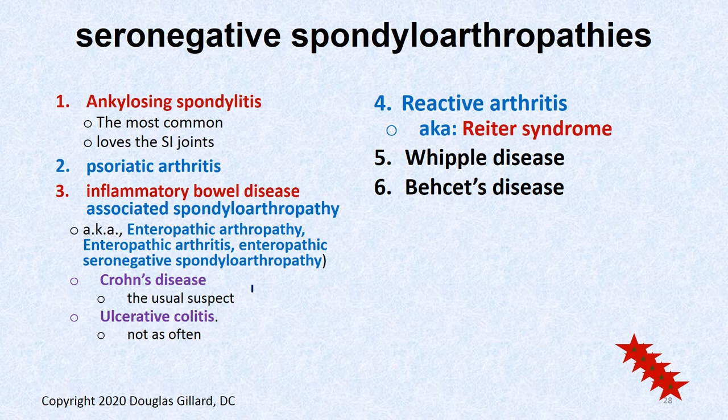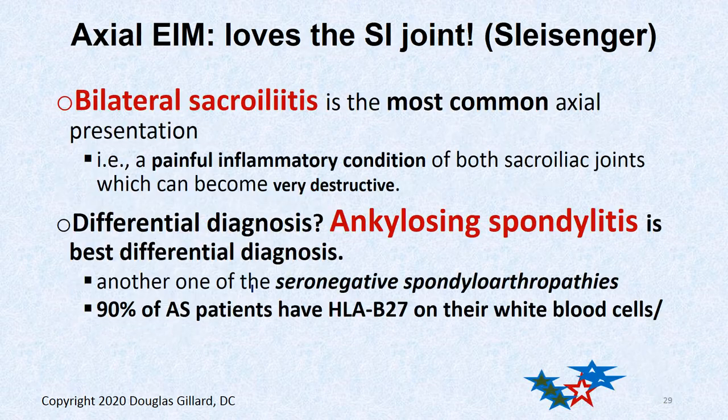The axial EIM of inflammatory bowel disease, if it hits the spine, will show up in the SI joints more likely than not — which makes it hard to differentiate from other seronegative spondyloarthropathies, especially ankylosing spondylitis.